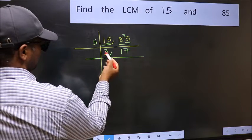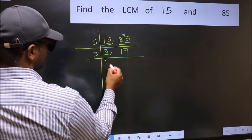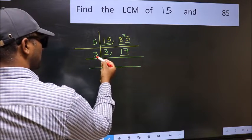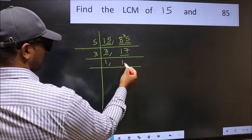Now here we have 3. 3 is a prime number. So 3 times 1 is 3. The other number 17 is not divisible by 5, so you write it down as it is.